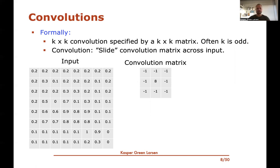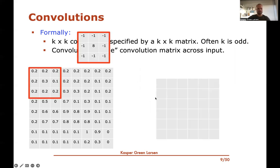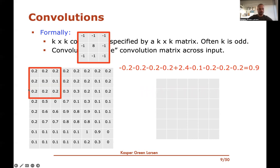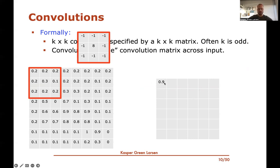The idea is to slide this matrix across the input. Starting at the upper left corner, we compute the inner product between the convolution matrix entries and the corresponding image pixels — entry-wise multiplication and sum. For example: eight times 0.3 gives 2.4, minus one times 0.1 gives −0.1, and so on. Summing everything gives 0.9, which is placed in the top left of the output.